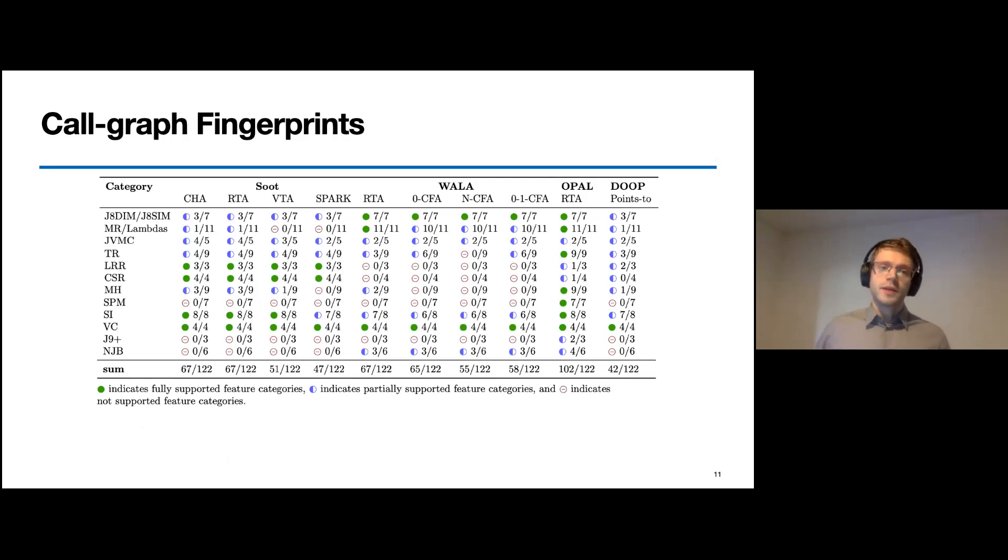So how does it look like? This table shows the results of applying our test framework on 10 different call graph algorithms from four different frameworks, namely Soot, Wala, Opal, and Doop. With that, we created their fingerprints and therefore also captured their soundiness and their capabilities.